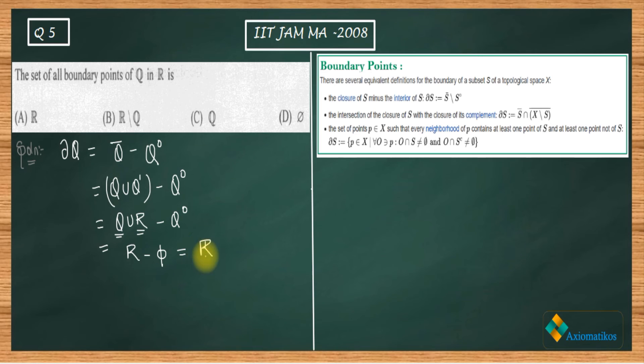So now this will equal to R. So what you finally concluded is that R is the set of boundary points for Q. So what things have we used? We have used that Q dash is equal to R. Another thing is Q interior is also empty. So if you don't know how this thing is concluded, you can look at your analysis book and then try to see why this thing is happening.